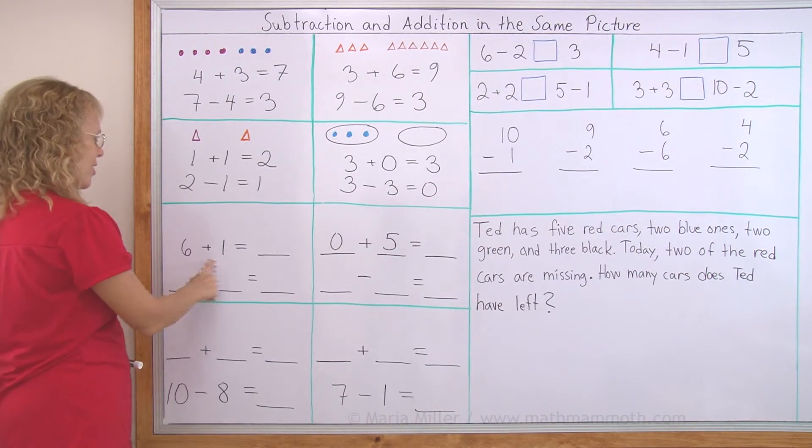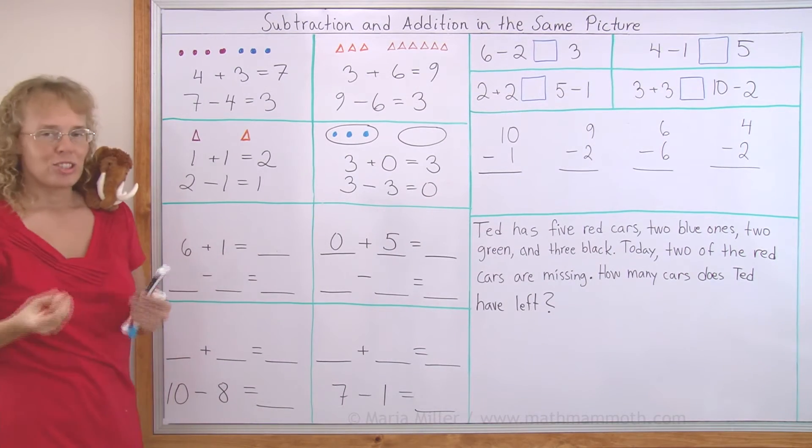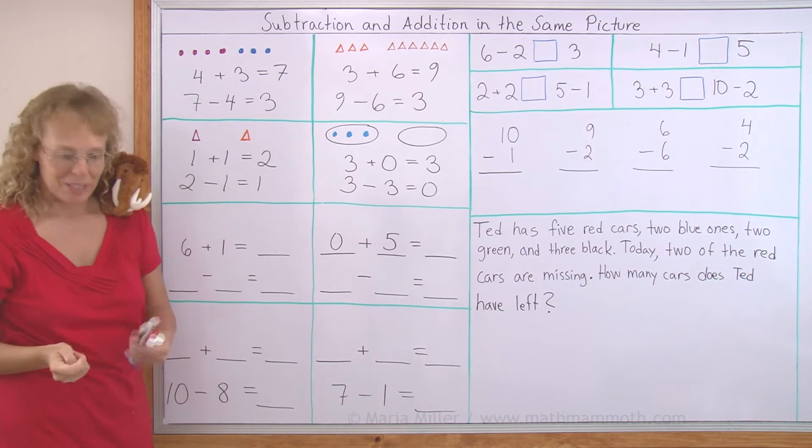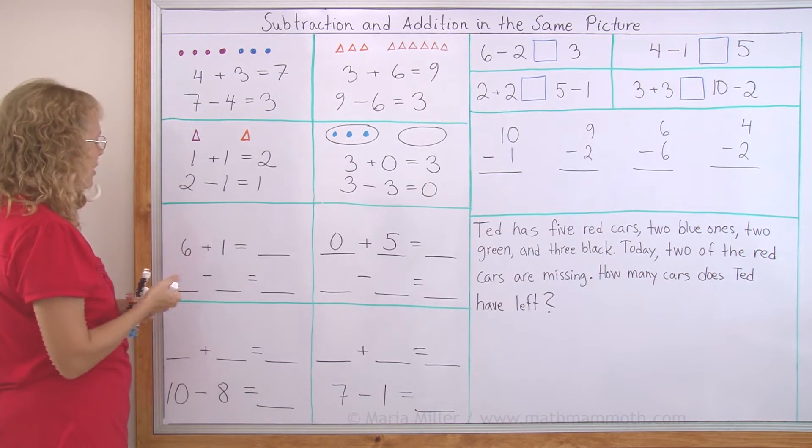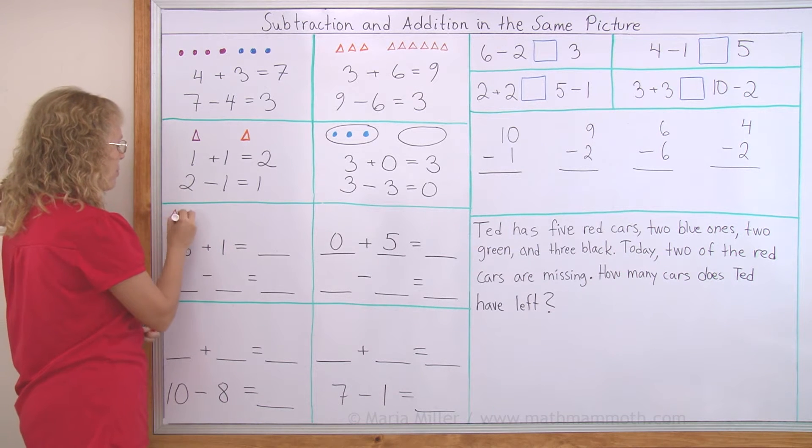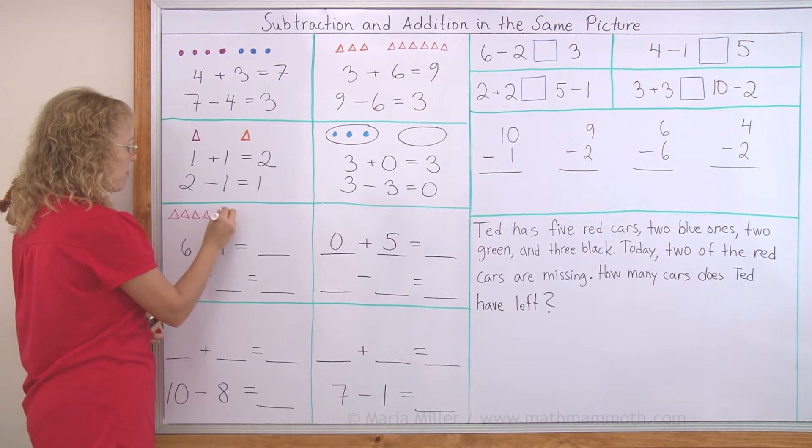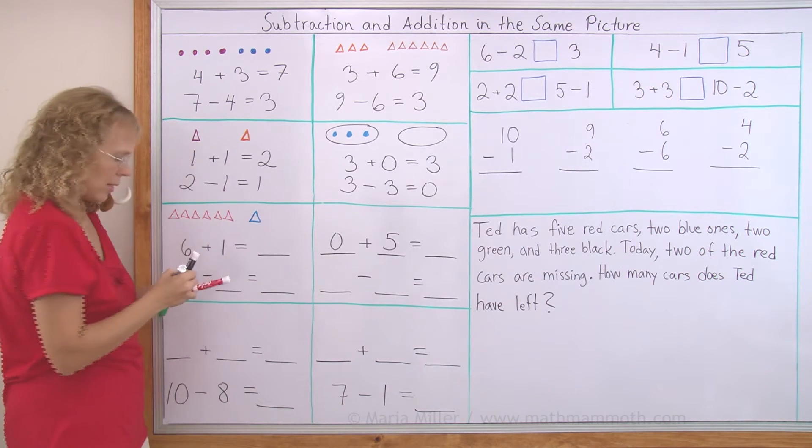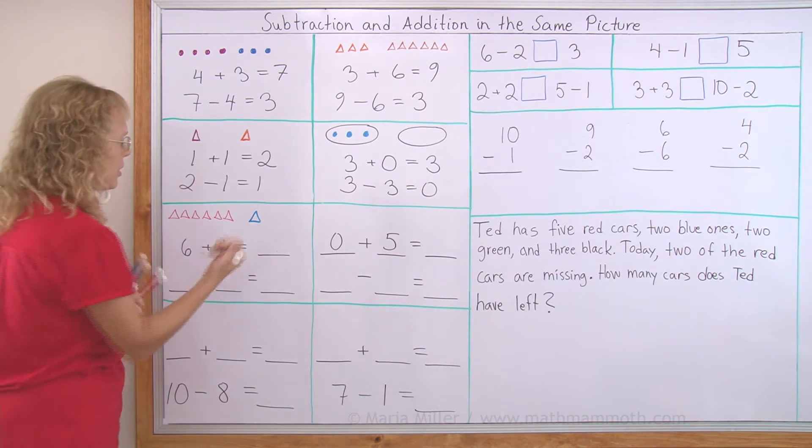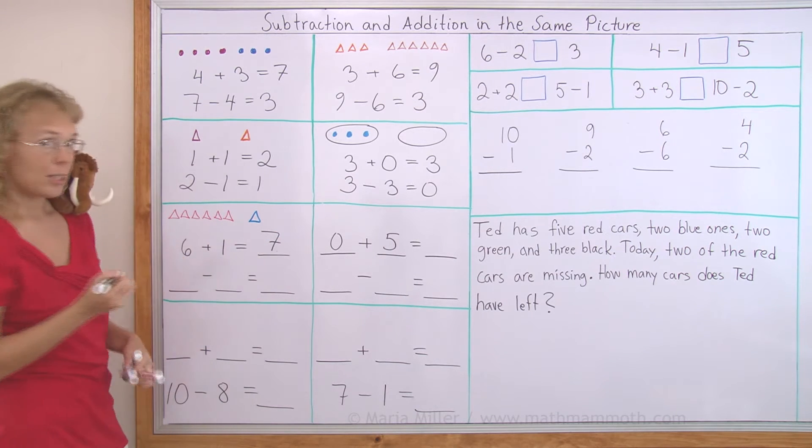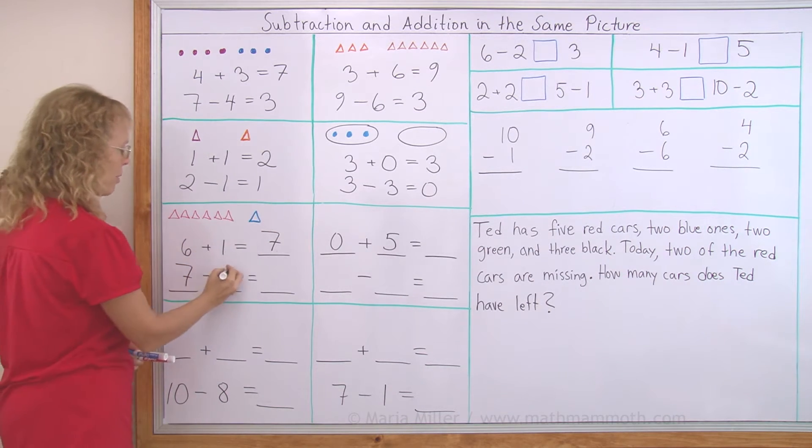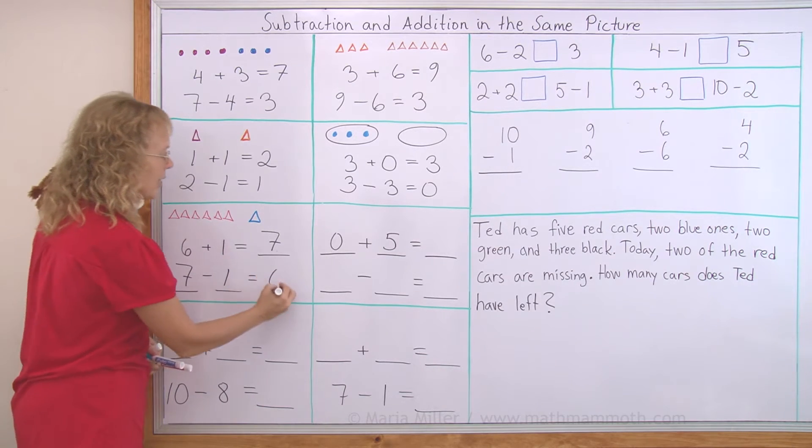Over here there's an addition and I need to draw the matching something here. And then I need to write a matching subtraction. So let's say I draw here some triangles. Six and one. 6 + 1 = 7. And the subtraction, seven in the beginning, maybe this one goes away, one goes away, six are left.